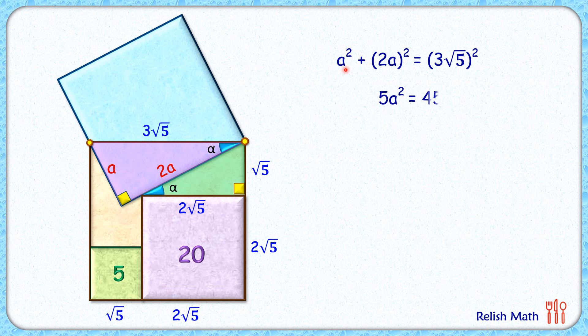Simplifying it, a square plus 4a square is 5a square equals 45, or a square is 9 and a is 3 centimeter. As a is 3 centimeter, thus 2a which is the side length of the blue square is 6 centimeter. So the area of this blue square will be 6 square or 36 centimeter square, and that's our answer.